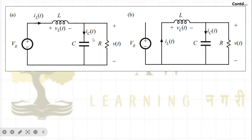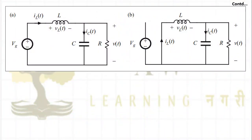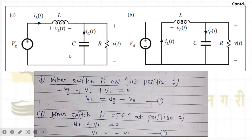Circuit A represents the buck converter when the switch is at position one, and circuit B represents it at position two. To analyze any DC-DC converter, the inductor voltage is key. Put the switch at position one and find the inductor voltage; then put it at position two and find the inductor voltage again. Just apply KVL to get the inductor voltage equation.